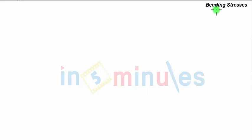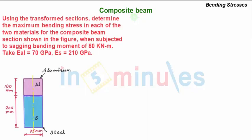Welcome to InfoMinutes. We take a problem on bending stresses and consider a composite beam. Problem statement is: using the transformed section, determine the maximum bending stress in each of the two materials for the composite beam section shown in the figure.